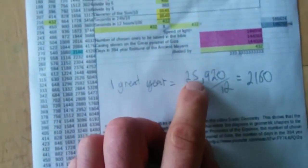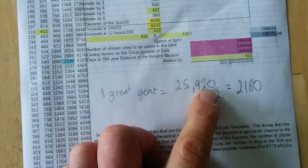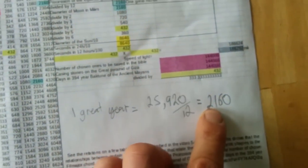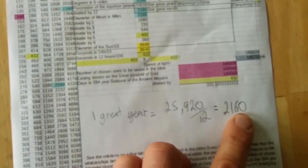I made a spreadsheet to explain it a little bit better. And a Great Year turns out to be 25,920 days. Divide that by 12. So each age is about 2,160 years.